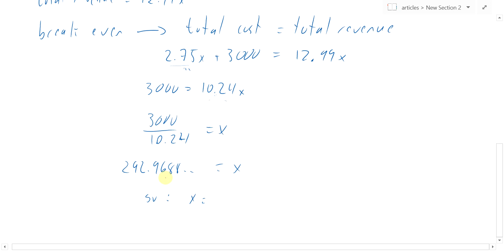But you can't sell 96% of a shirt. So how many shirts does he actually have to sell? 293 shirts to break-even. In fact, if he sells 293 shirts, he'll be a little bit ahead, but not much.